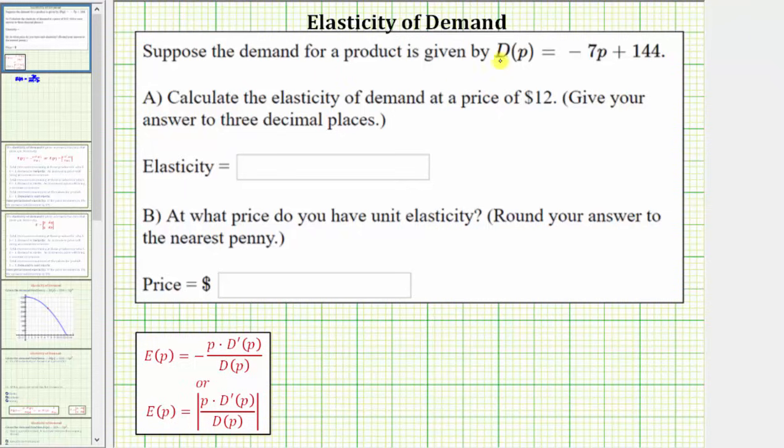Suppose the demand for a product is given by d of p equals negative seven p plus 144. For part A, calculate the elasticity of demand at a price of $12. Part B, at what price do we have unit elasticity?